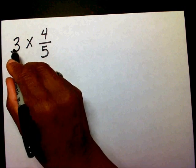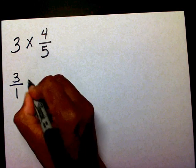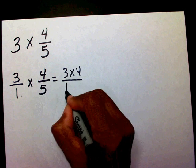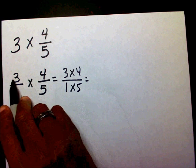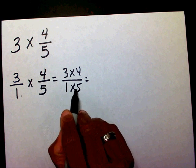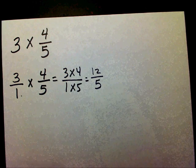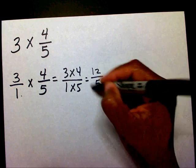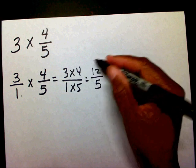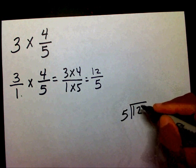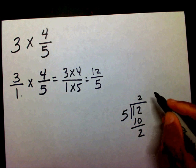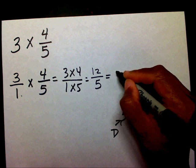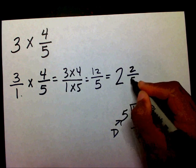We need to change this whole number into a fraction. So that's going to be 3 over 1 times 4 fifths. I'm going to multiply across: 3 times 4, and 1 times 5. I multiply my numerators and my denominators. 3 times 4 is 12, and 1 times 5 is 5. Your numerator is larger than your denominator, so this creates an improper fraction. We need to change this into a mixed number, so I'm going to divide 12 divided by 5. 5 goes into 12 twice. My whole number is 2, my numerator is 2, and my denominator is 5. This is in lowest terms.